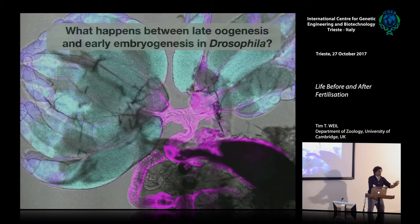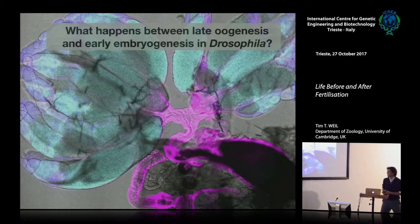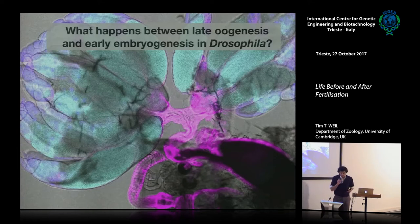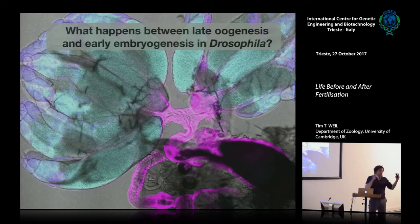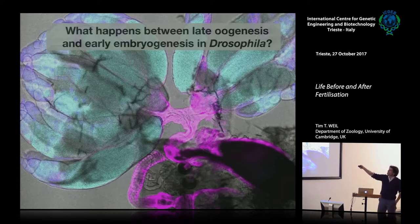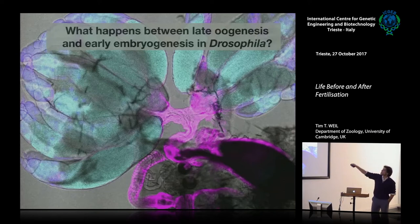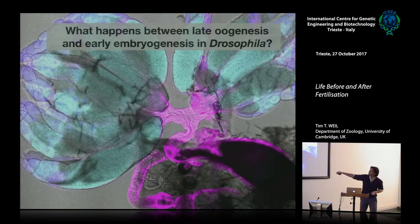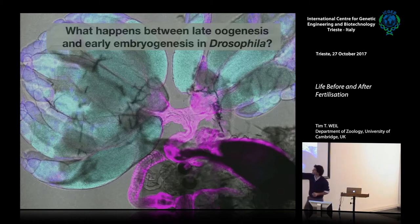In the last few minutes, I want to tell you about a project that drew us into a totally different field — what's happening between the end of oogenesis and early embryogenesis. At stage 14, bicoid is at the anterior and nanos at the posterior. The egg passes into the oviduct, becomes activated, and we can see the size difference as the egg swells and starts up its cell cycle again. Once in the uterus, it's fertilized and deposited.